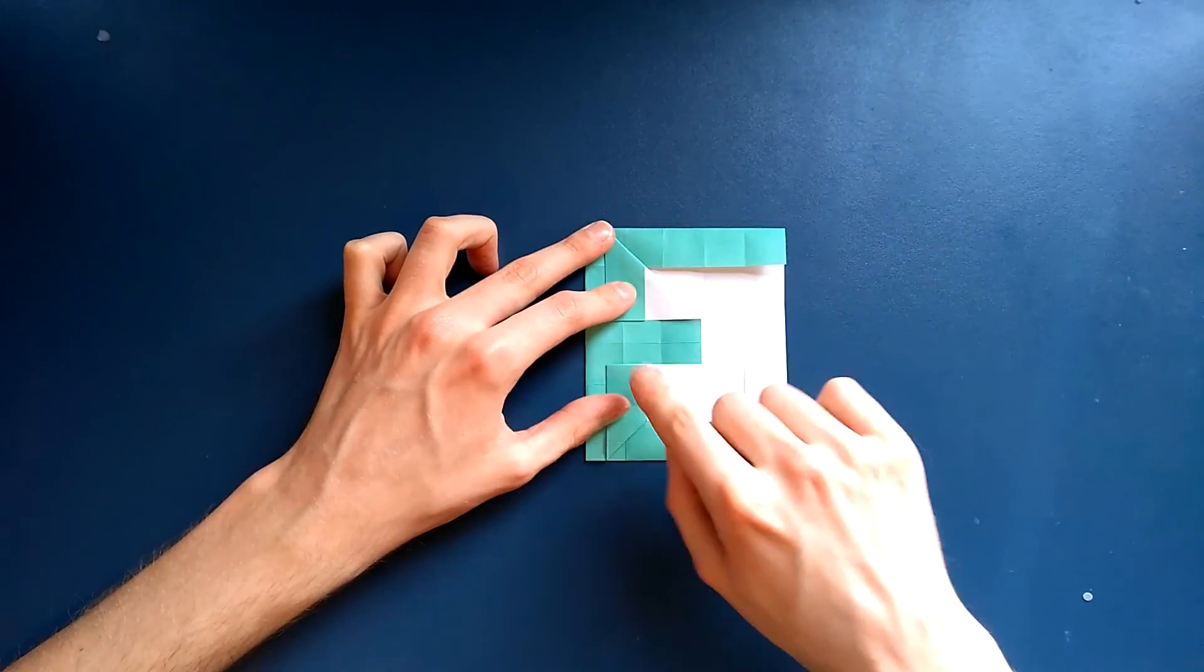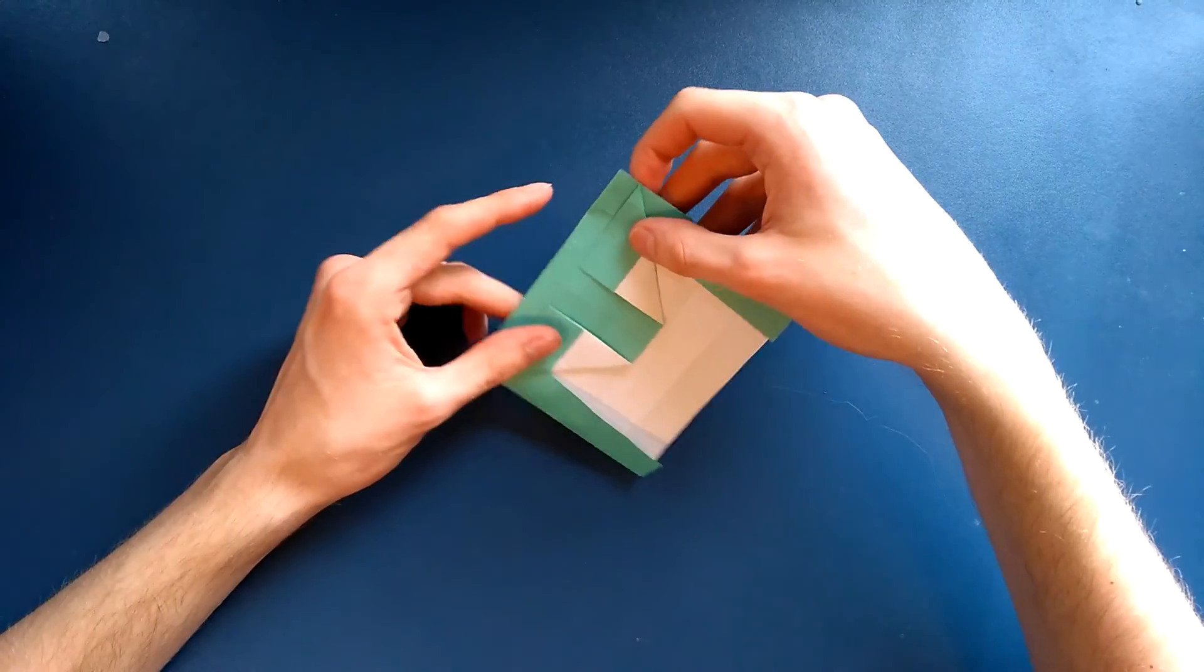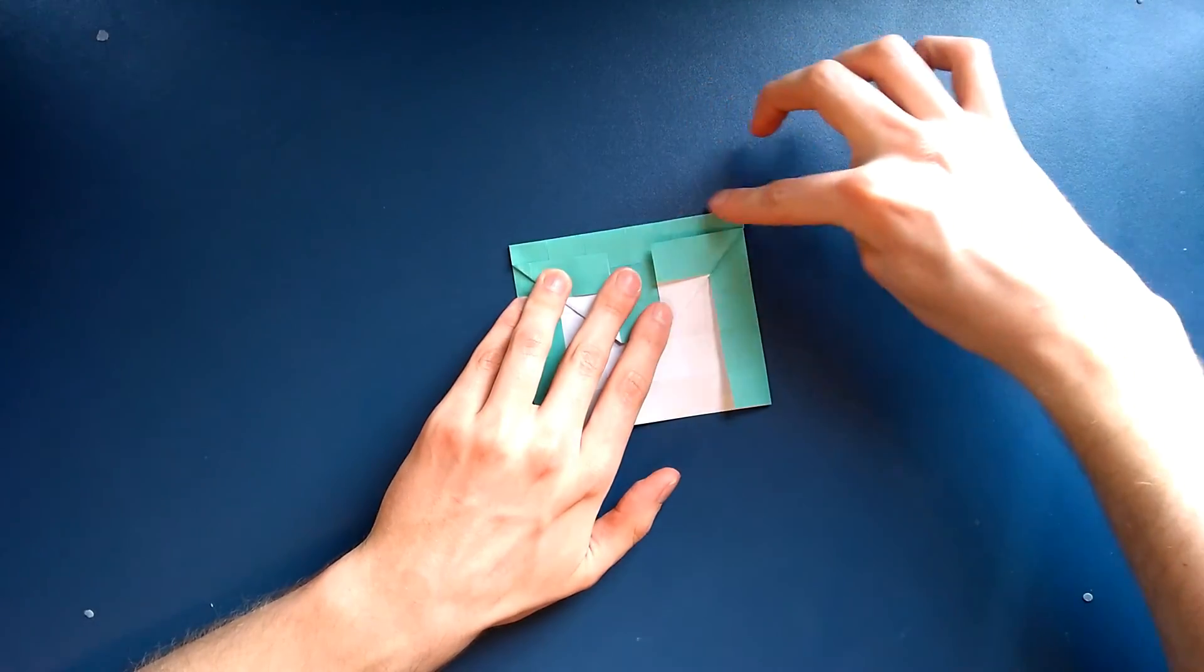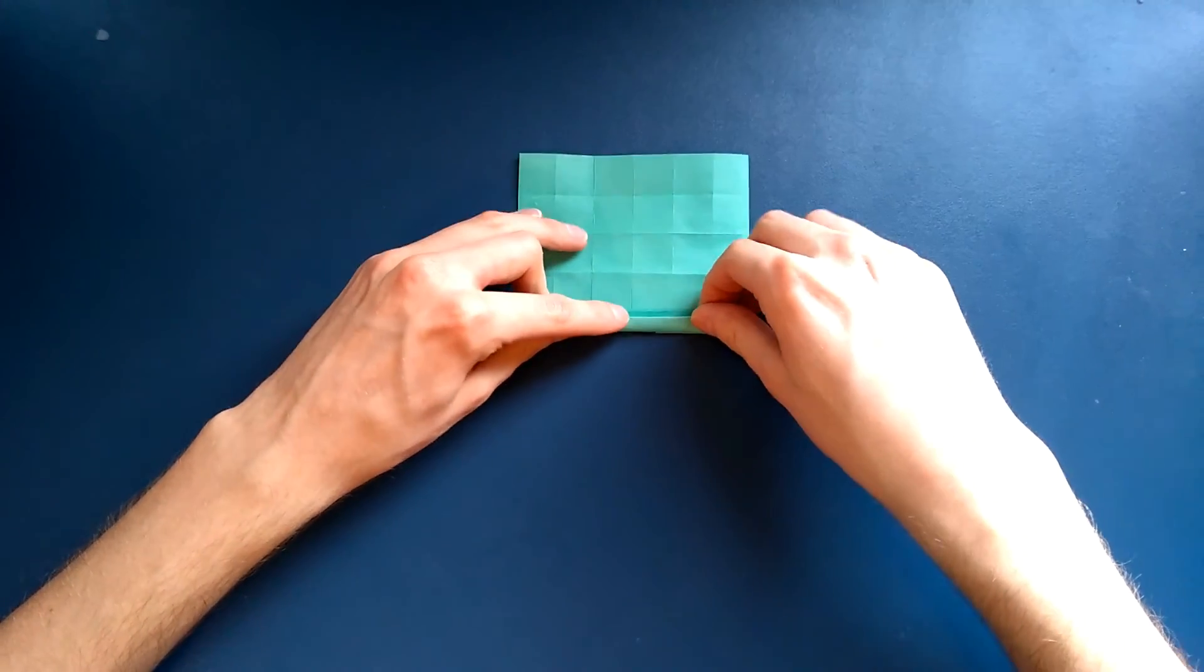So it should look like that. So now you see where we're getting the E from. Next thing you want to do is fold back this little strip here that you just made, the little bit that was sticking out.